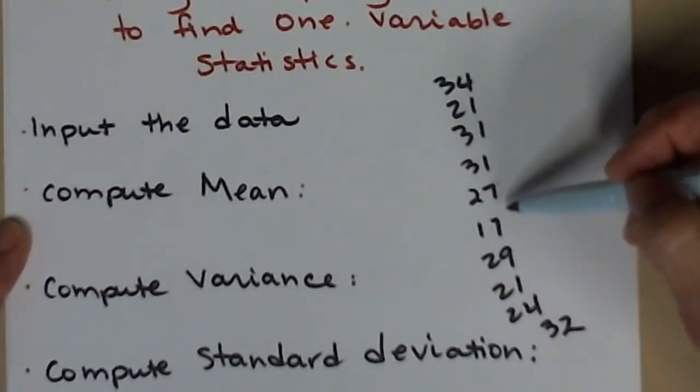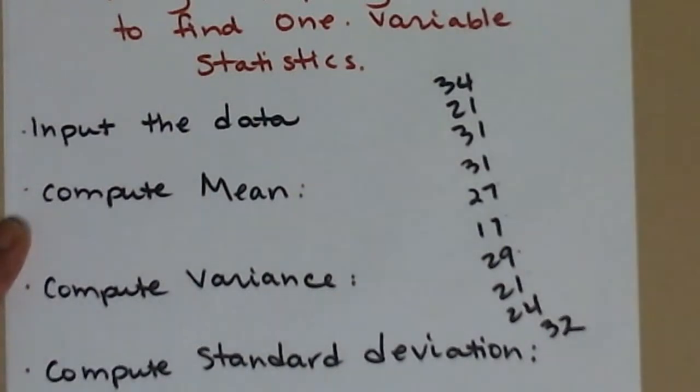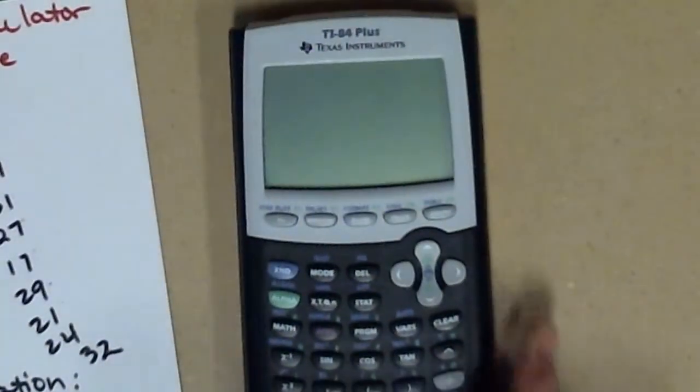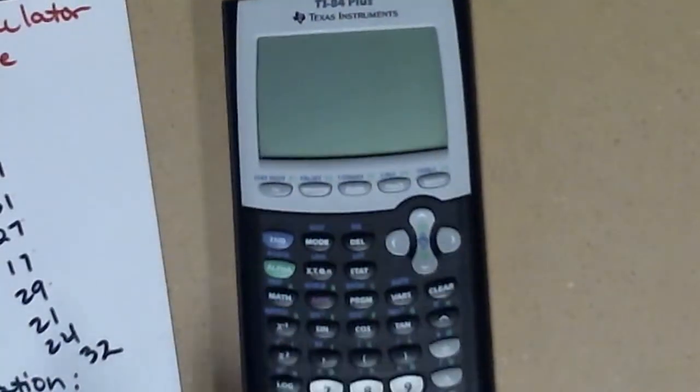So there's my list of 10 numbers. Quick check: 1, 2, 3, 4, 5, 6, 7, 8, 9, 10. I'm going to slide my paper over so I can zoom in on the calculator.